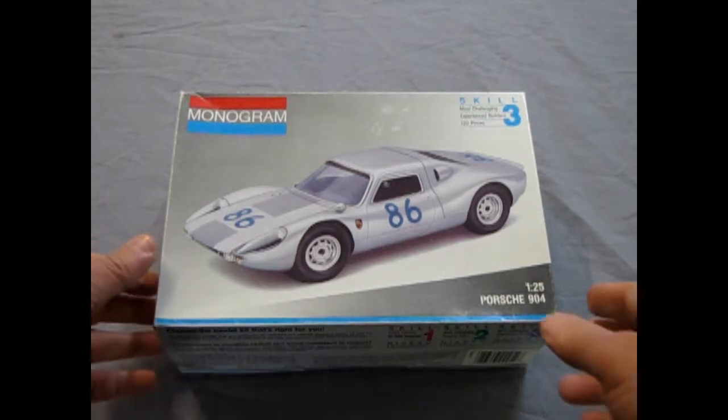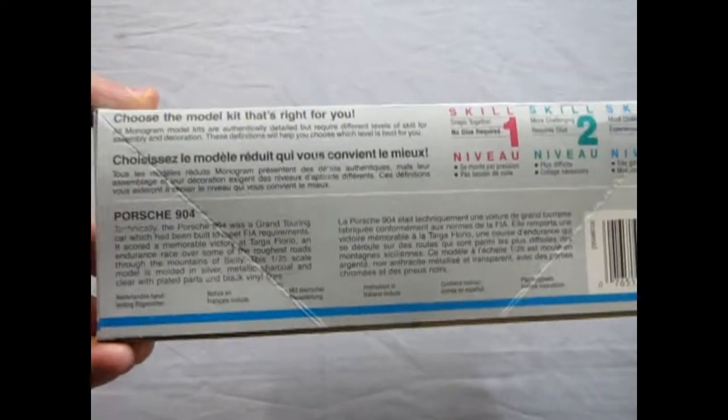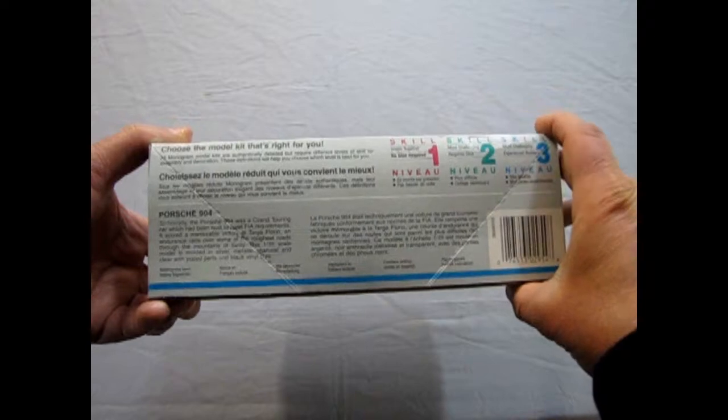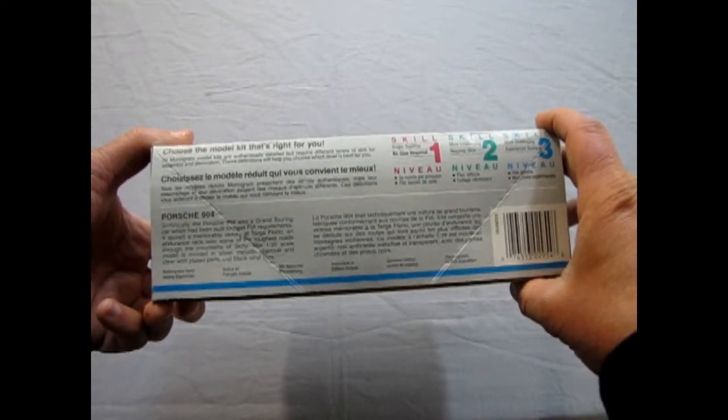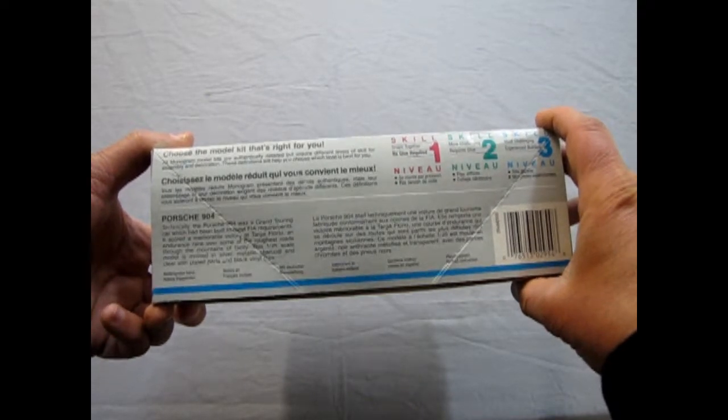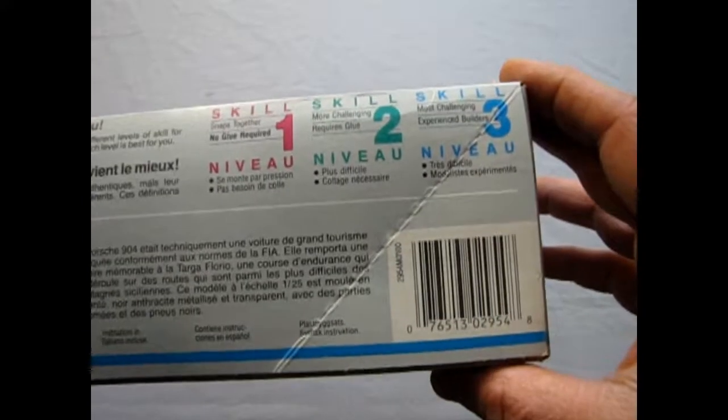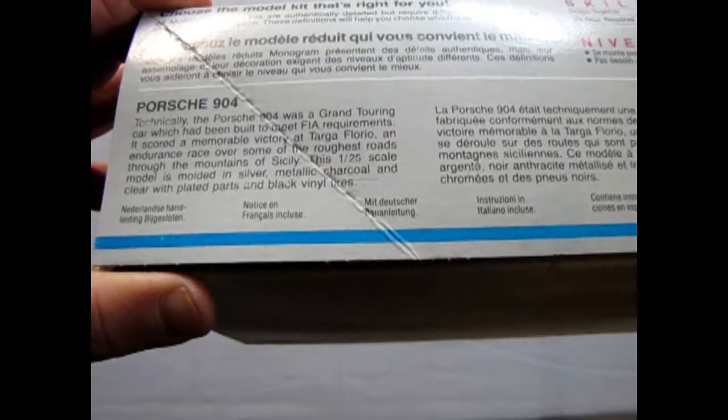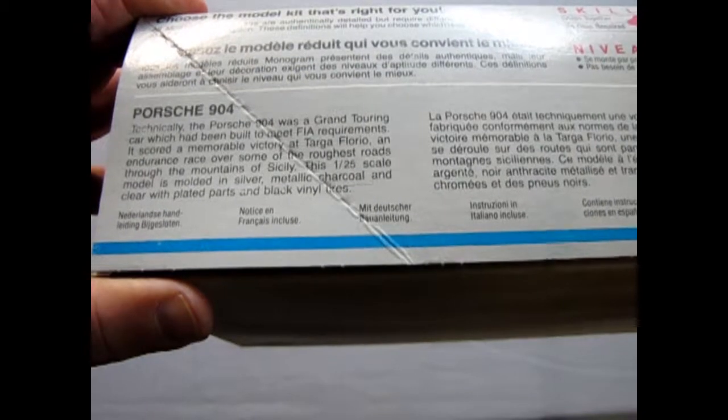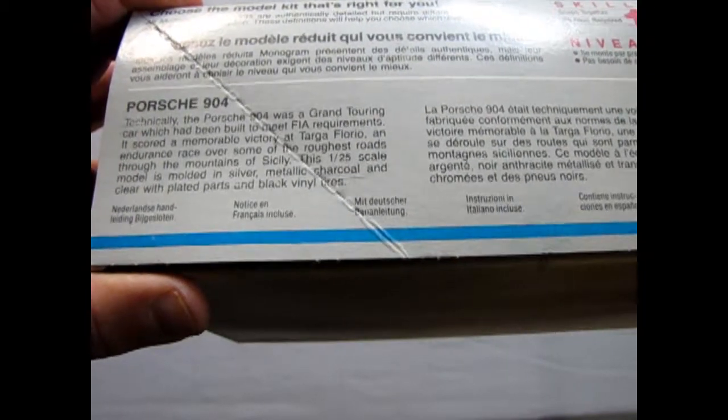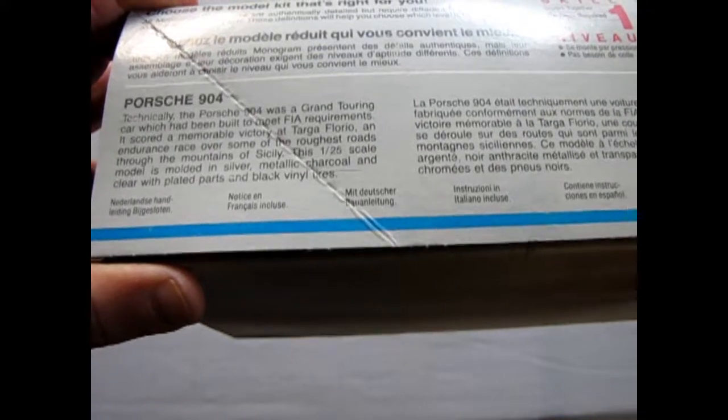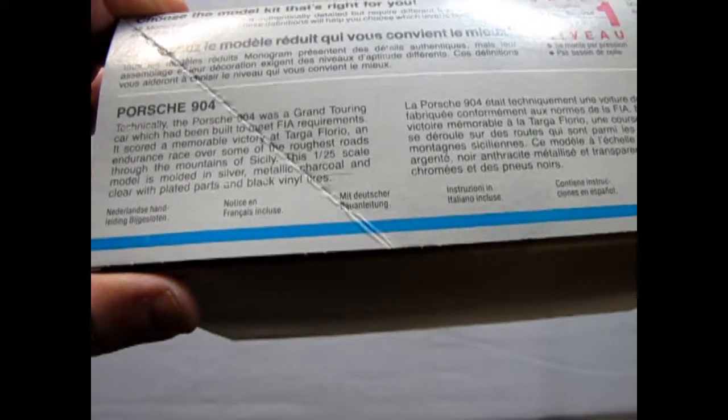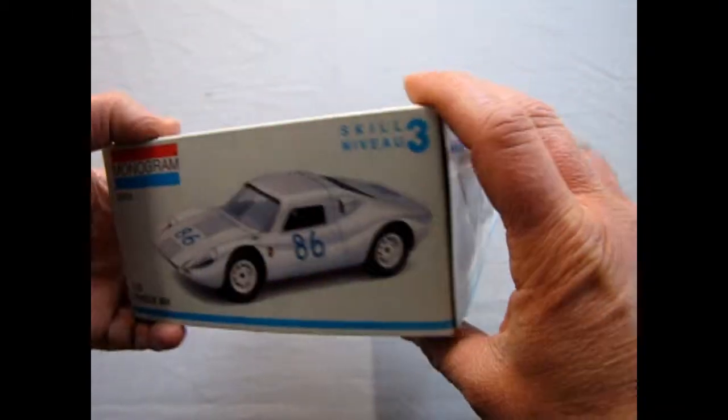Now let's relive those glory days of racing in 1964 as we take a look at the Monogram 1964 Porsche 904. It says on the side of the box here, choose the model that's right for you. All Monogram model kits are authentically detailed but require different levels of skill for assembly and decoration. These definitions will help you choose which level is best for you: one, two, or three. Well this kit is saying it's skill 3, so that means it's right at the top of the difficulty level. Porsche 904, technically the Porsche 904 was a grand touring car which had been built to meet FIA requirements. It scored a memorable victory at Targa Florio, an endurance race over some of the roughest roads through the mountains of Sicily.